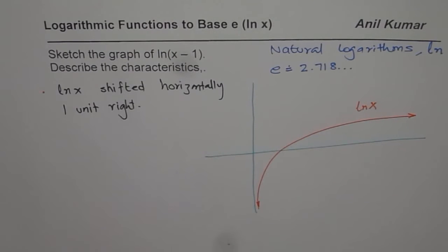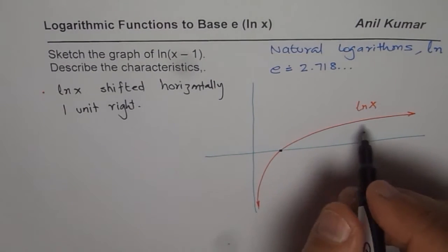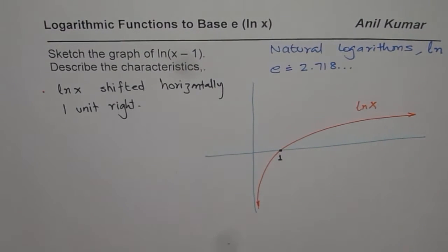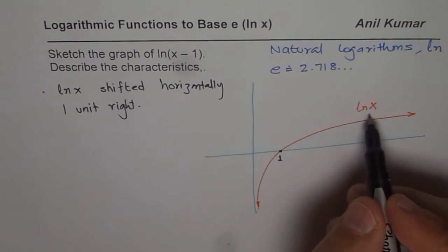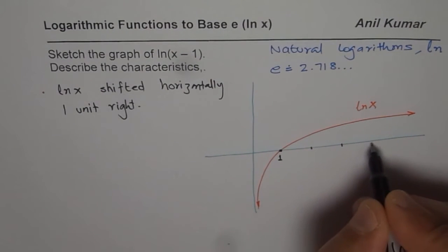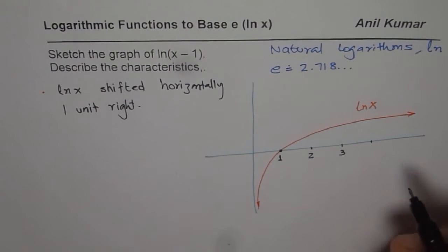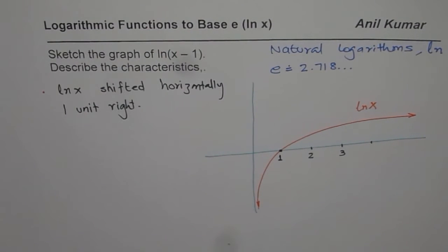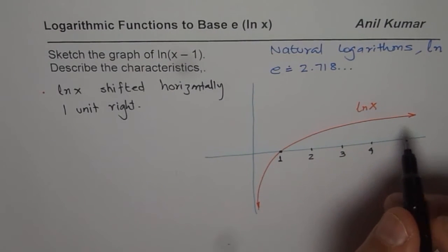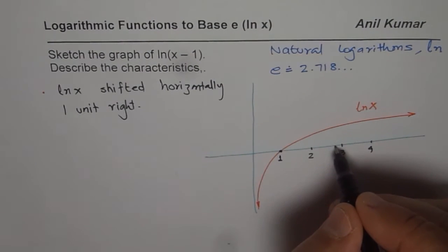As with any other graph, the x-intercept for the parent function will be at point 1. Since the base is e, let me say this is 1 unit, so this becomes 2, 3, and 4. This is a very approximate drawing which will help you understand the concept. E is approximately 2.7, so it is close to 3.